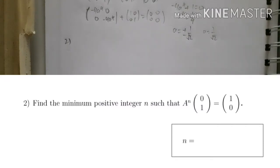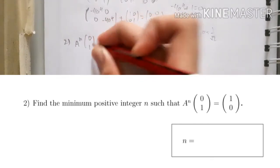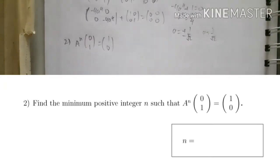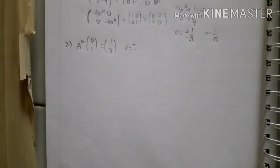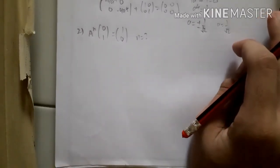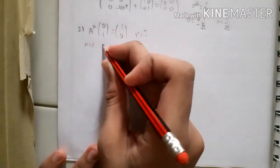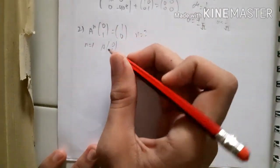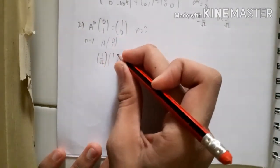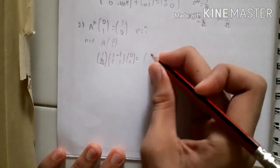For number two, find the minimum positive integer n such that A to the power of n times the column matrix [0,1] equals [1,0]. We test values one by one. For n=1: A times [0,1] = (1/√2)*[[1,-1],[1,1]]*[0,1], which gives a result with factor 1/√2, not equal to [1,0].